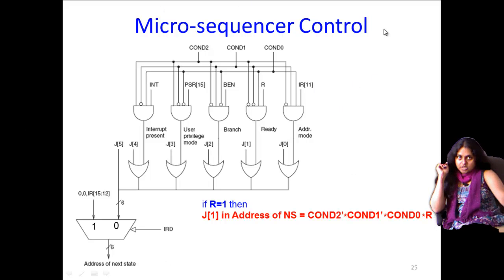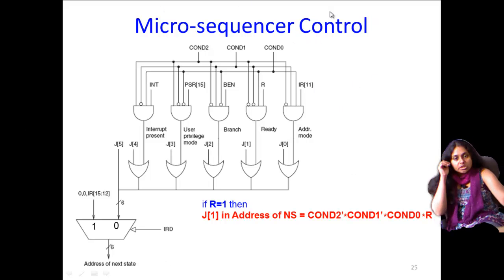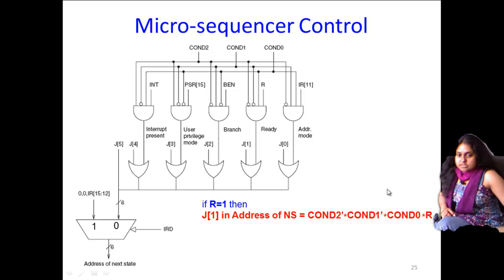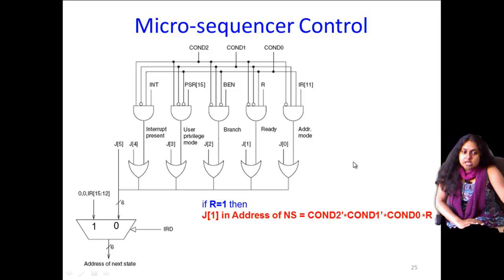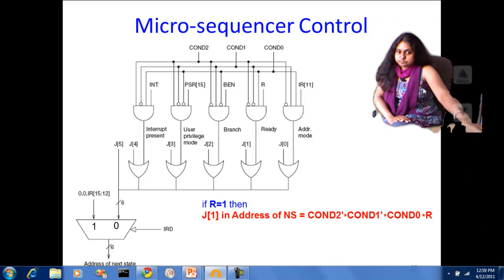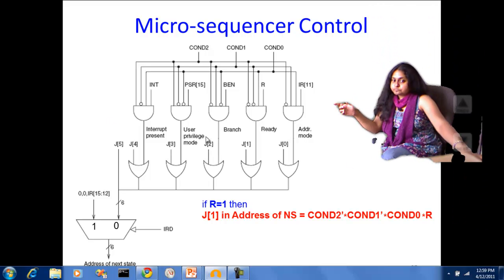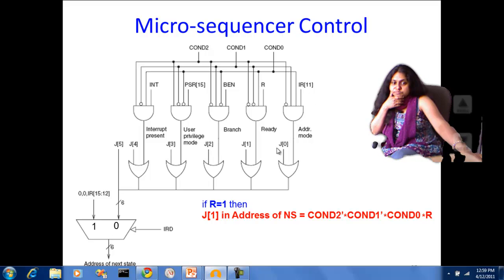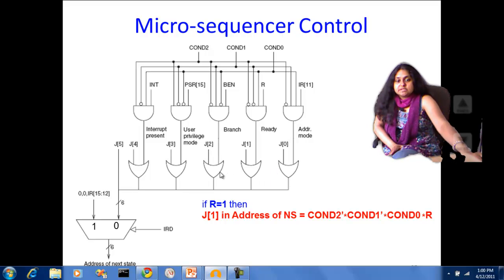So this is that piece of hardware. This is also called the micro sequencer control. It is a very important piece of hardware in any processor. So let's look at what this does in some detail. So now if you look here at the outputs of the OR gates, the OR gate outputs are bits j0 to j5.